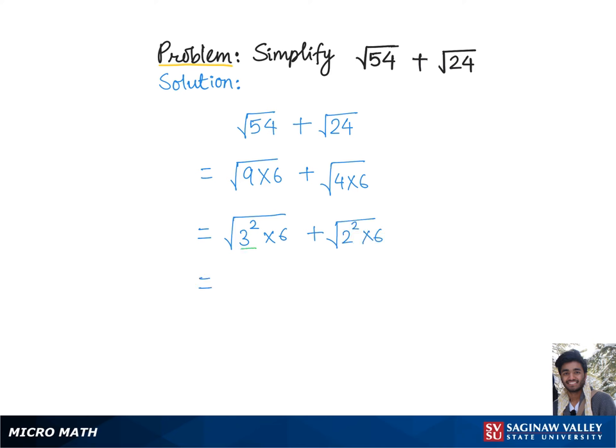This 3 squared can be pulled out of the square root as simply 3, and then we are left with root 6 plus again this 2 squared can be pulled out of the square root.